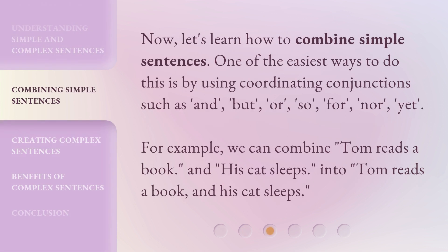Now, let's learn how to combine simple sentences. One of the easiest ways to do this is by using coordinating conjunctions such as: and, but, or, so, for, nor, yet. For example, we can combine 'Tom reads a book' and 'his cat sleeps' into 'Tom reads a book and his cat sleeps.'